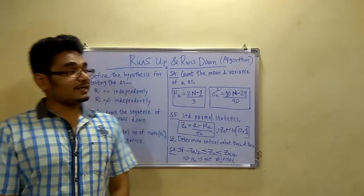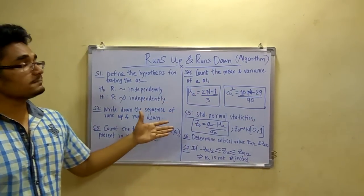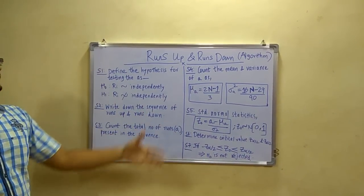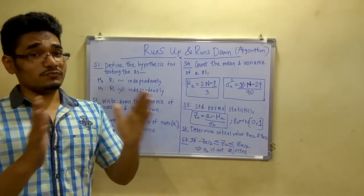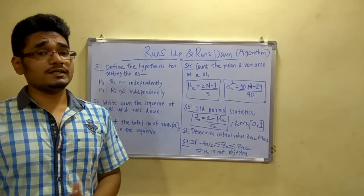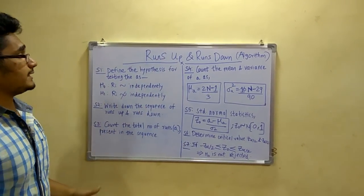This is Ranjiraj Nair and today in my video I will be talking about the runs up and runs down algorithm. So this is the algorithm, it is of basically 7 steps. Trust me it is very easy algorithm. If you solve it, you can easily score this algorithm if you solve this problem. So let's get started.